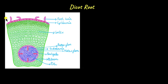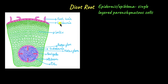The outermost layer is called epidermis or epiblema. This is a single-layered structure made up of parenchymatous cells. The cells of this layer protrude as unicellular projections called root hair, which increase the surface area of water absorption. Roots do not have a waxy coating called cuticle that is found in stems.